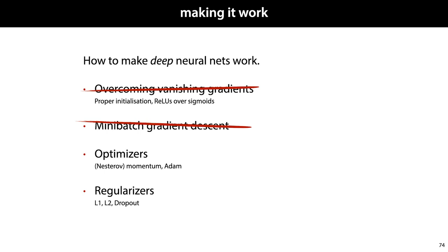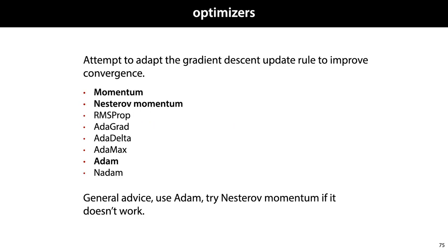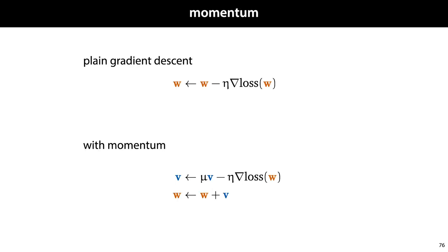Optimizers are algorithms that slightly adapt the gradient descent update rule to improve the convergence of your learning process. There are a large number of them, but we'll only look briefly at these three: Momentum, Nesterov Momentum, and Adam. In general, it's good advice to use Adam, but you can occasionally try Nesterov Momentum to see if it works better than Adam. Let's start with Momentum.